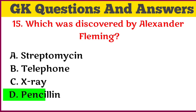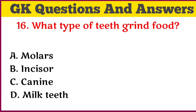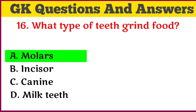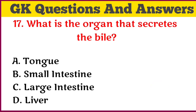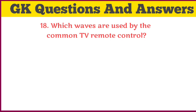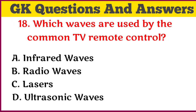Answer: Karl Landsteiner. Which was discovered by Alexander Fleming? Answer: penicillin. What type of teeth grind food? Answer: molars. What is the organ that secretes bile?